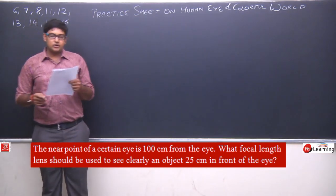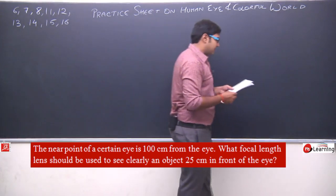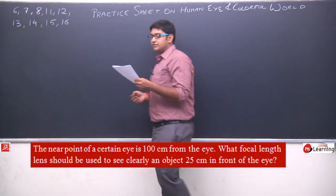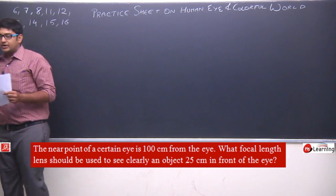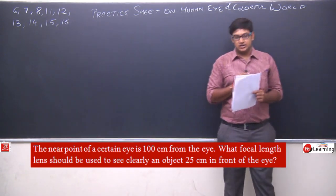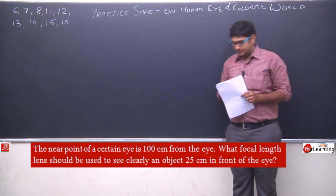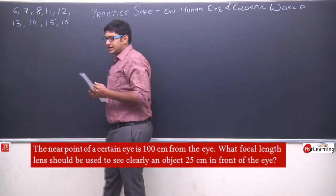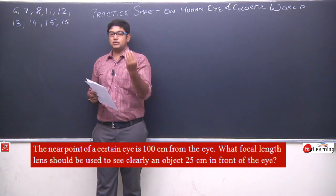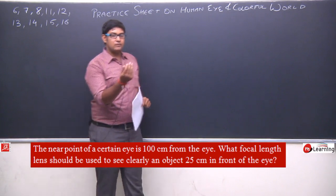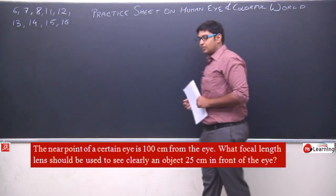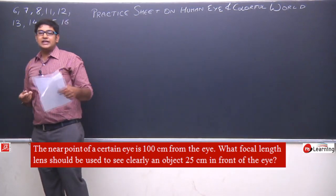Question number 6: the near point of a certain eye is 100 centimeters. What focal length lens should be used to see clearly an object at 25 centimeters in front of the eye? This person's near point is 100 cm. Near point is the minimum distance at which you can distinctly identify any object. This person has a near point of 100 cm.